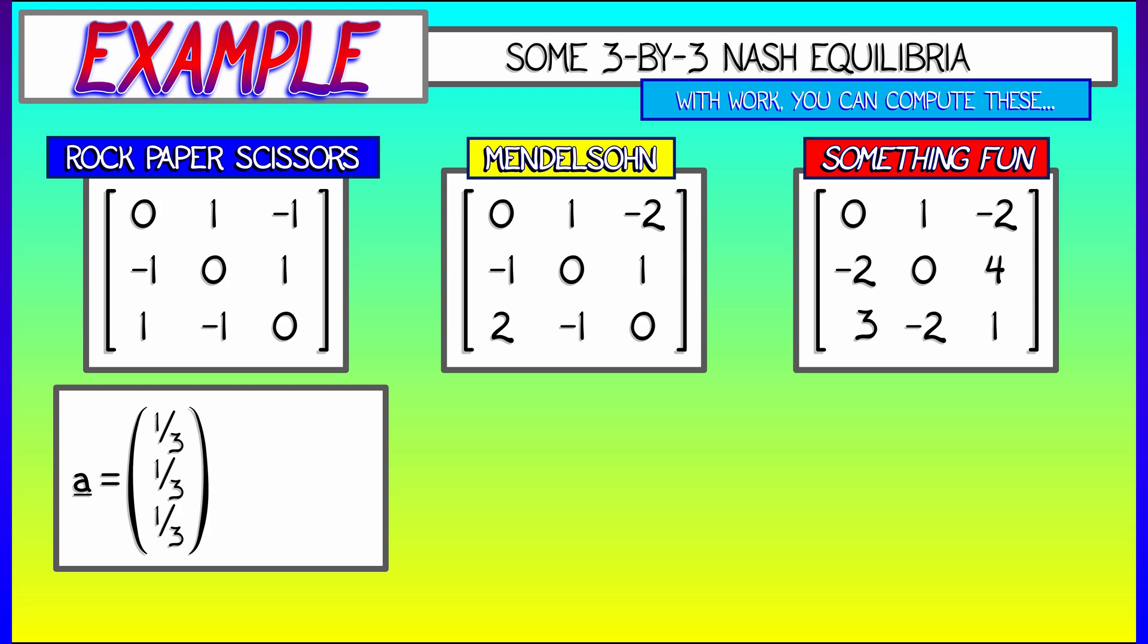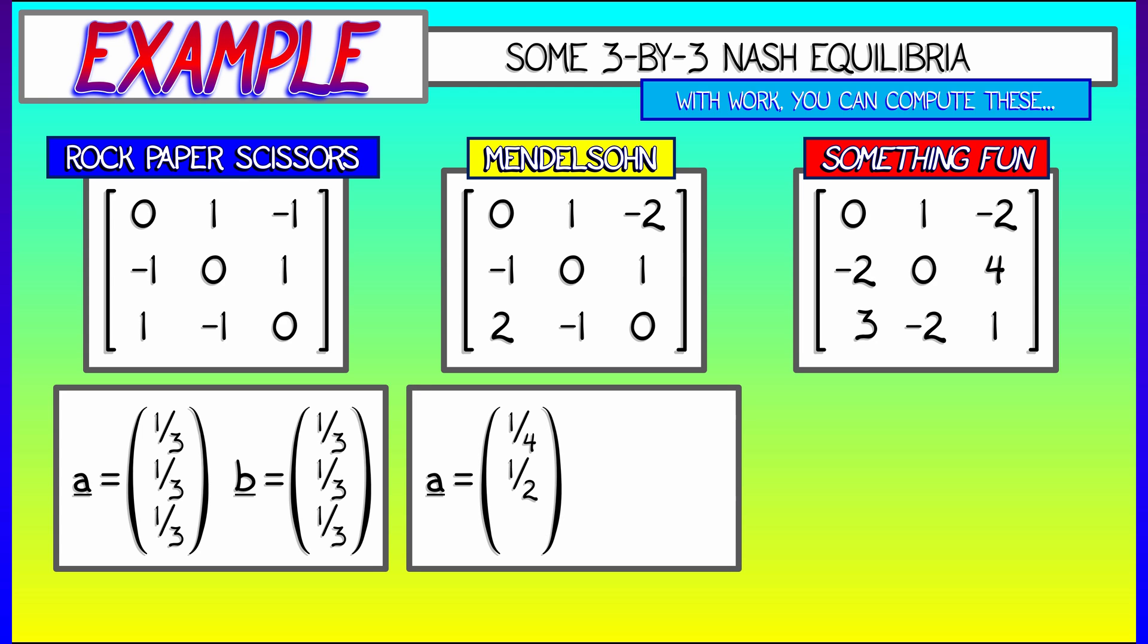If you analyze these, what you'll find is that for rock, scissors, paper, boom, it's the obvious thing. A and B are the same, one third, one third, one third, and nobody has an advantage. Perfectly symmetric.